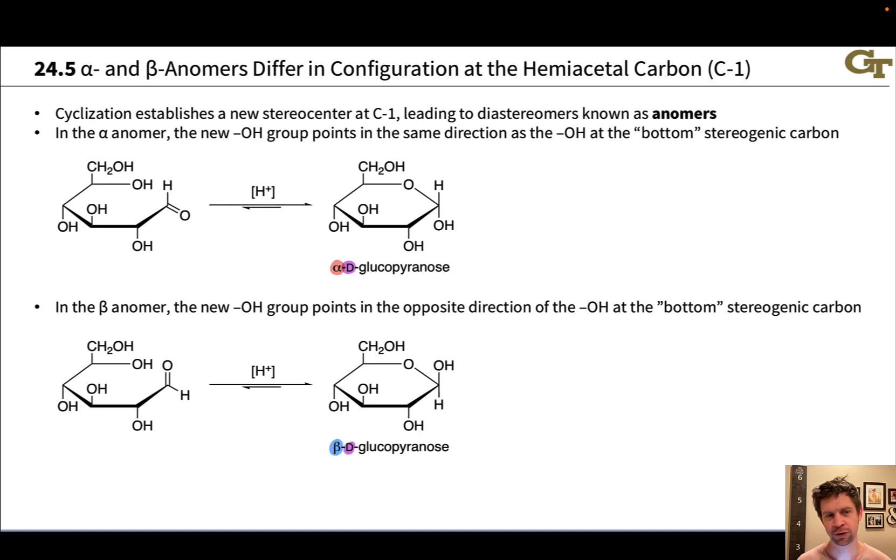So the cyclization of sugars creates a new stereocenter. And this leads to two possible diastereomers of the cyclic hemiacetal. This is true of pyranoses and the five-membered furanoses. Both of these types of cyclic sugars can form alpha and beta, what are called anomers. These are called anomers because they differ in configuration at that new stereocenter at C1, which is known as the anomeric carbon. In an aldose, that's the carbonyl carbon, the aldehyde carbon. And in a ketose, it's the ketone carbonyl carbon. In an aldose, that's C1. In a ketose, that's typically C2.